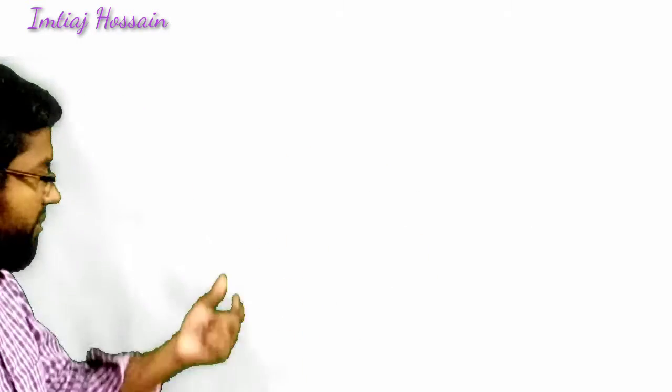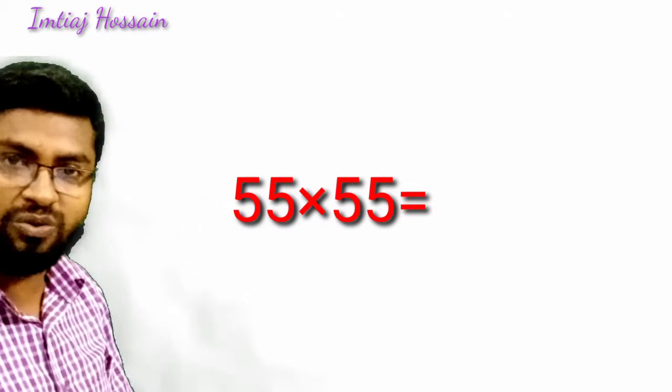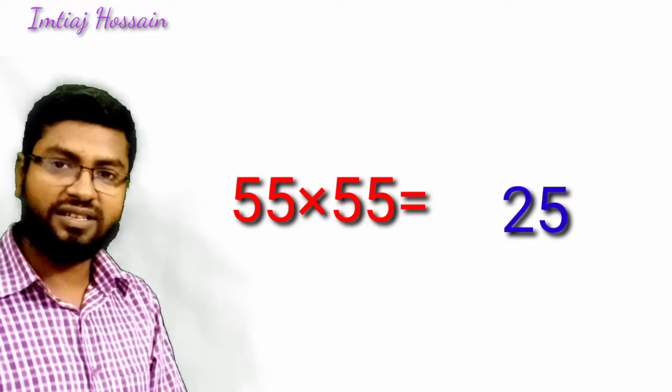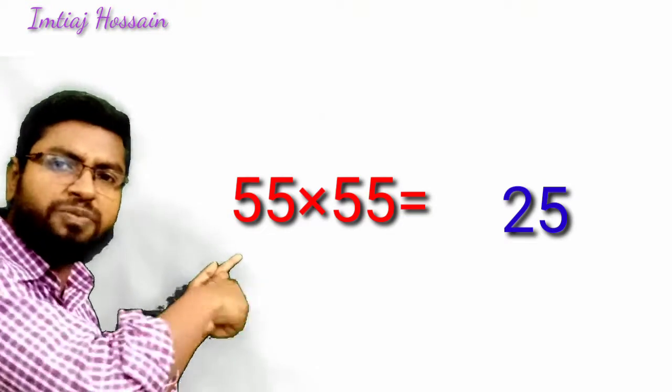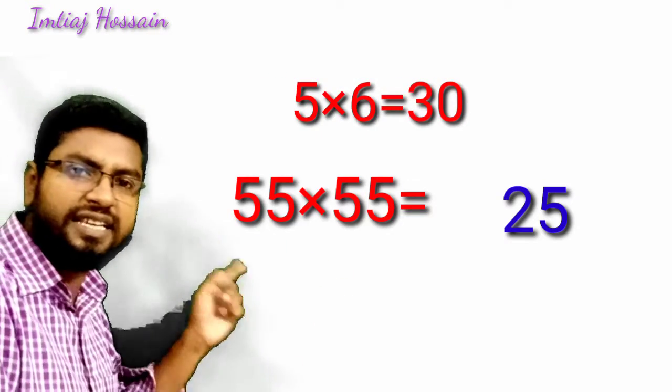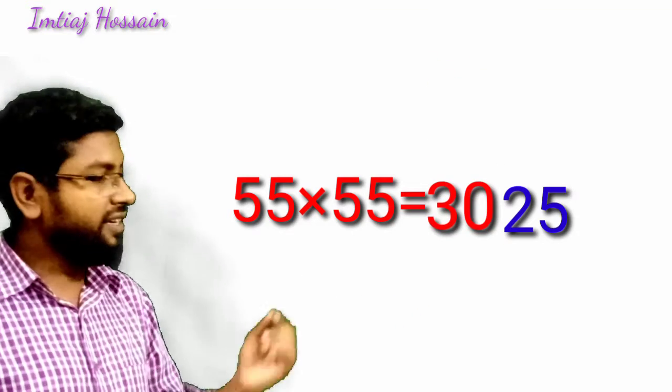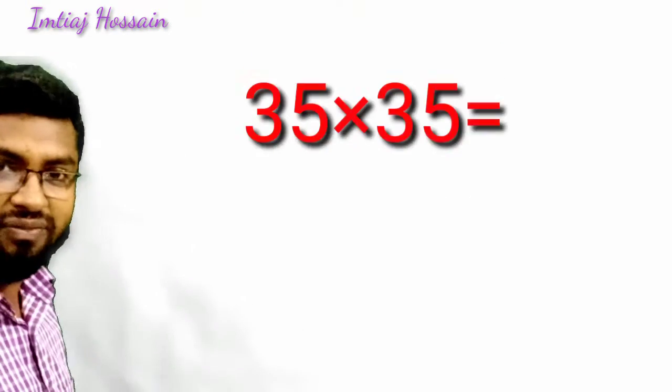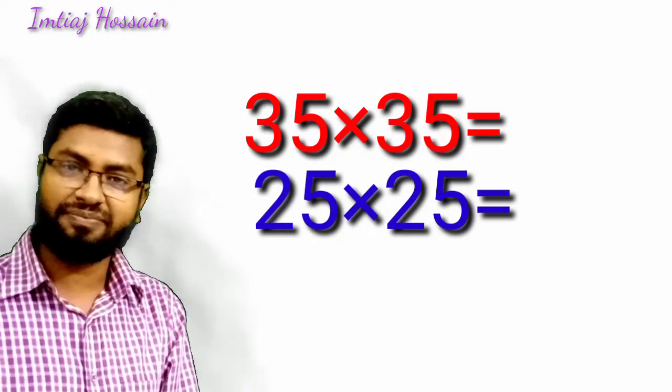See the next one. 55 times 55. This is for you, can you do it? 55, so 25 is the last digit. 5 is the first digit, the next digit after 5 is 6. 5 times 6 is 30, so the answer is 3,025. Now try 625 times 35, or 25 times 25. It's for you.